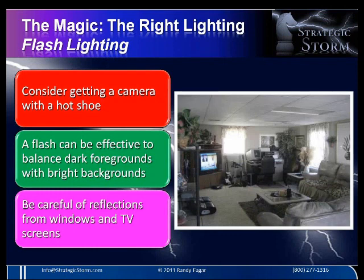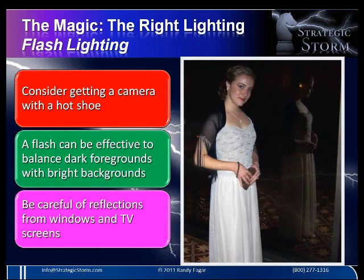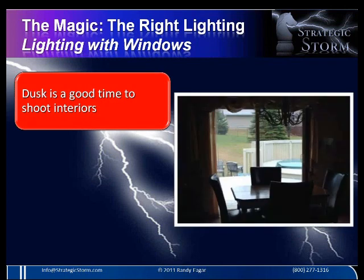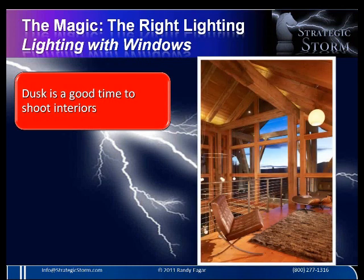The use of a flash can be particularly effective to balance a dark foreground with a bright background, for example a window. It can also help to light through a doorway and give a sense of life and light to another room. An issue dear to any photographer is reflections, and interior photography is no exception. Apart from obvious dangers of windows, look for nasty highlights in TV screens, pictures, and even silverware on the table. Dusk is a great time to photograph windows — low natural light will allow you to take photos that aren't blown out by midday sun.